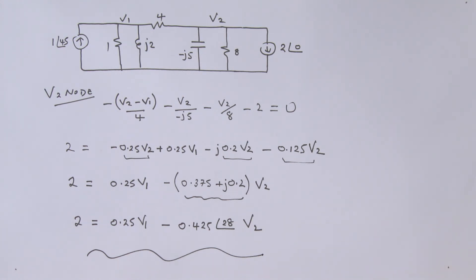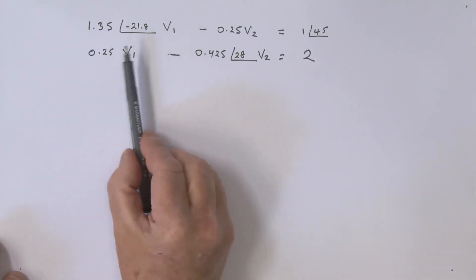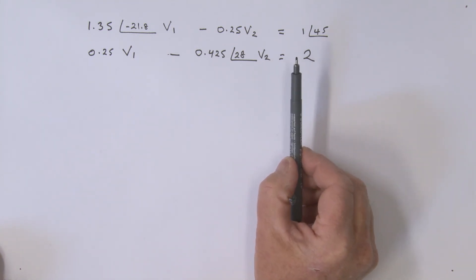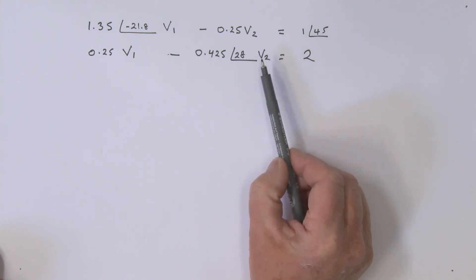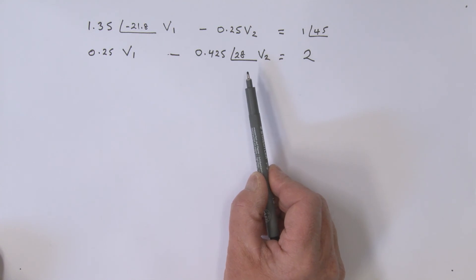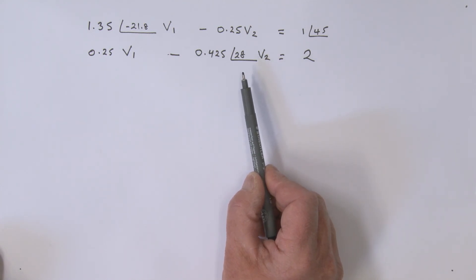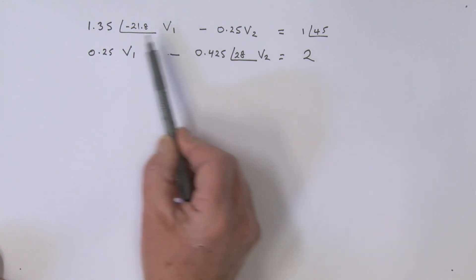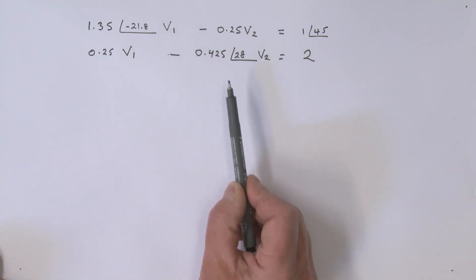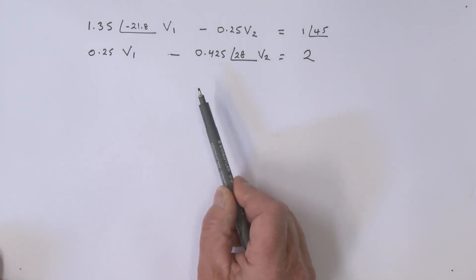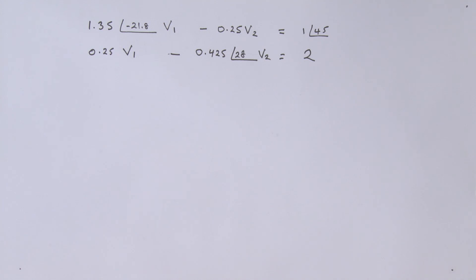We now have two equations with two unknowns. To solve them, I'd like you to use a determinant approach. If you're rusty on this, go back and look at determinants under mathematical methods. Give it a go, and when you're ready come back and we'll work through the problem together.